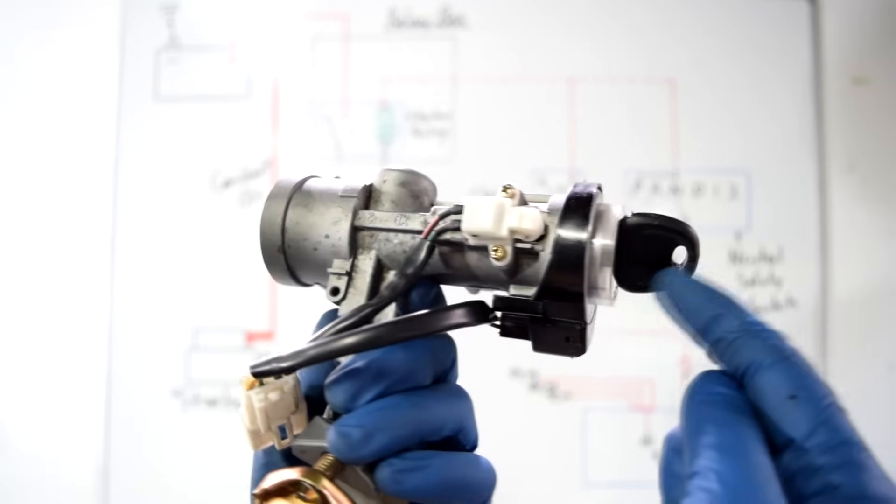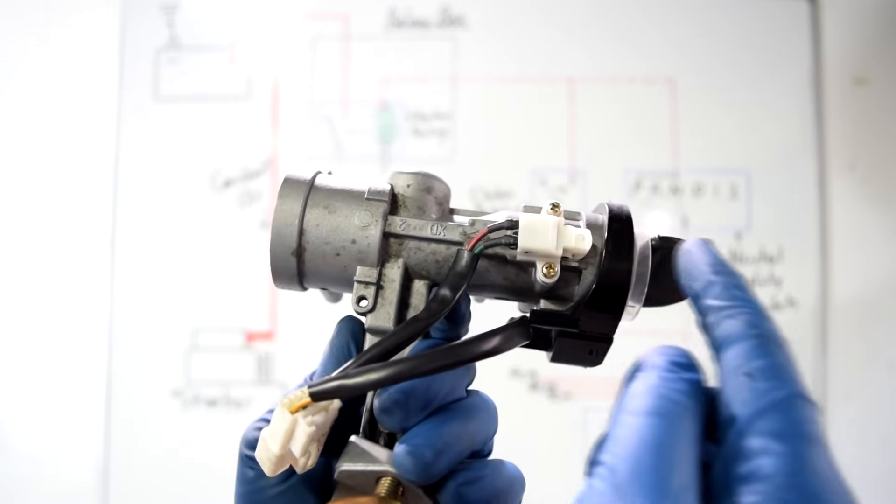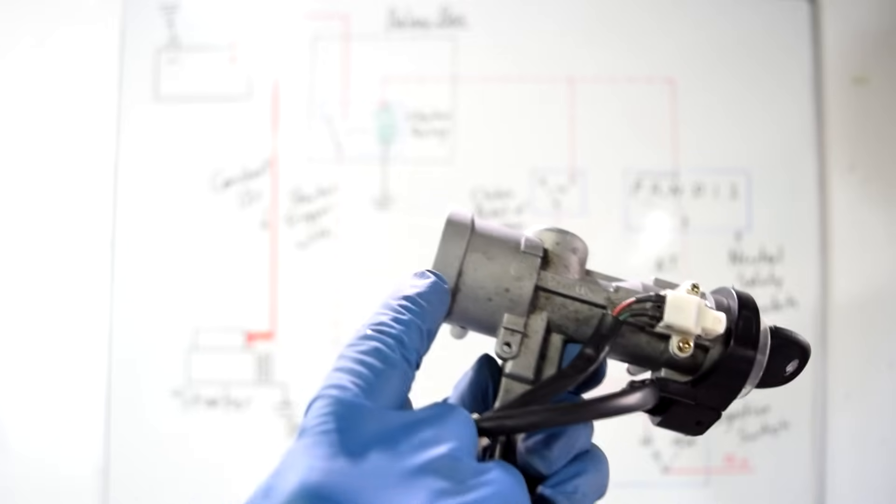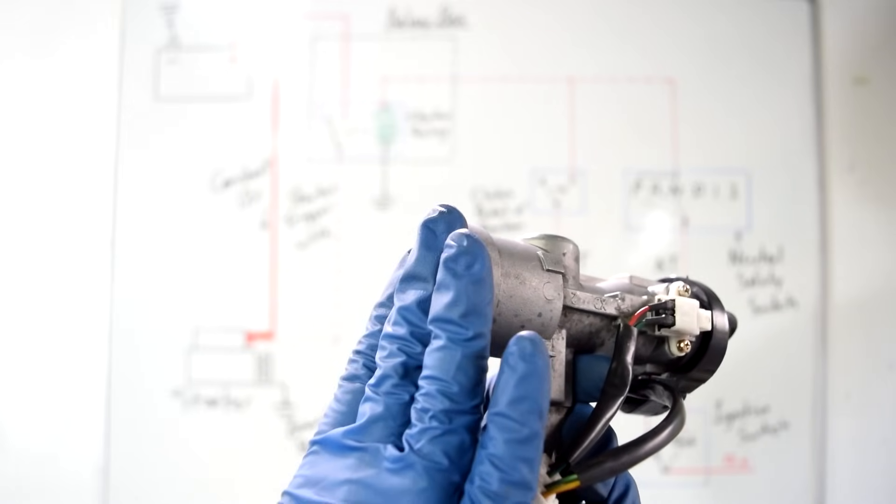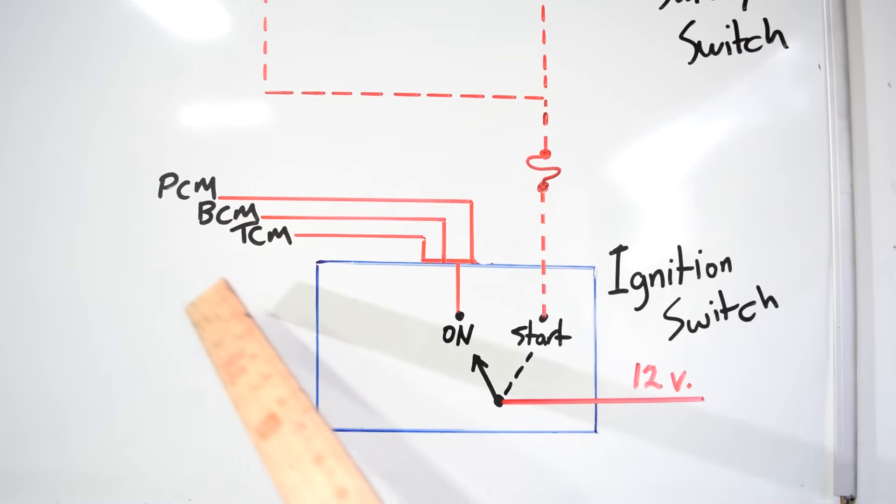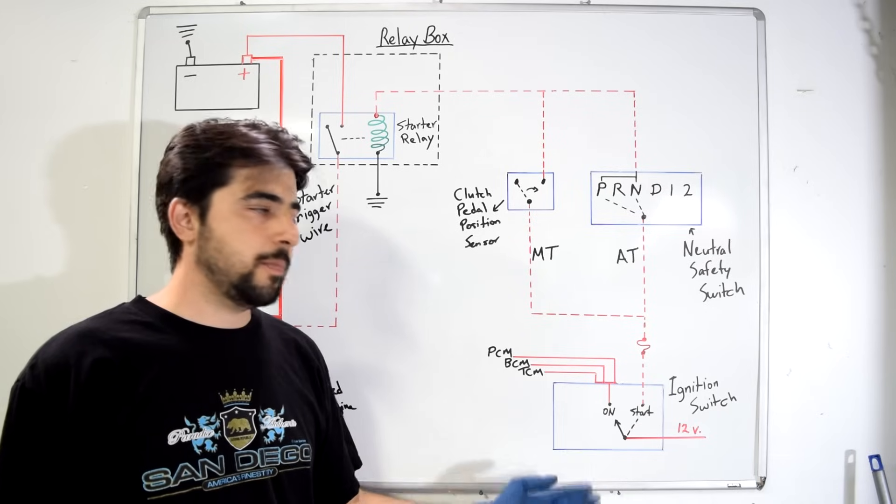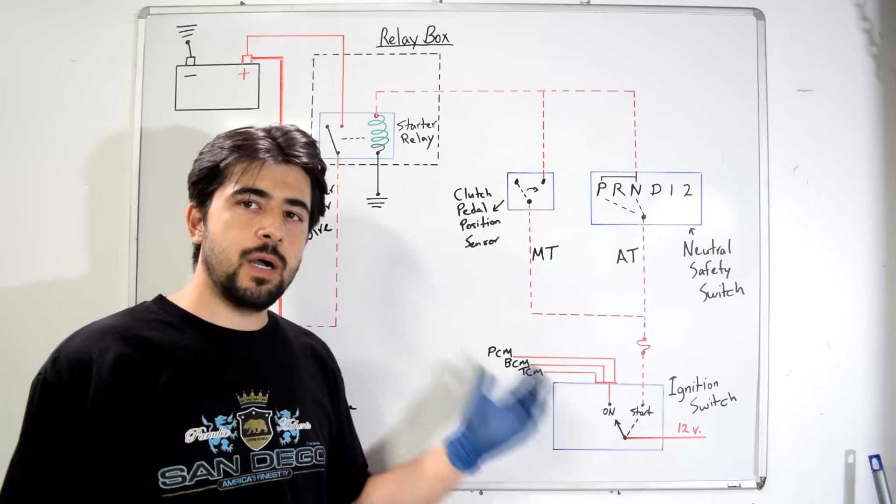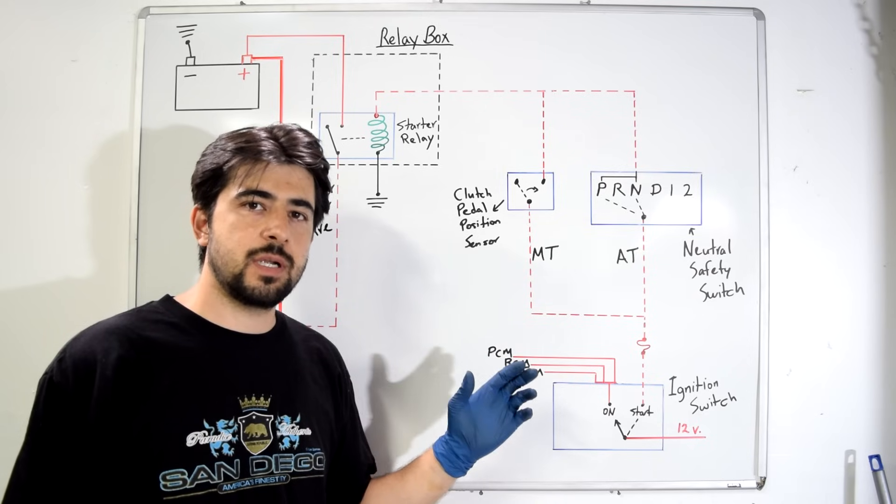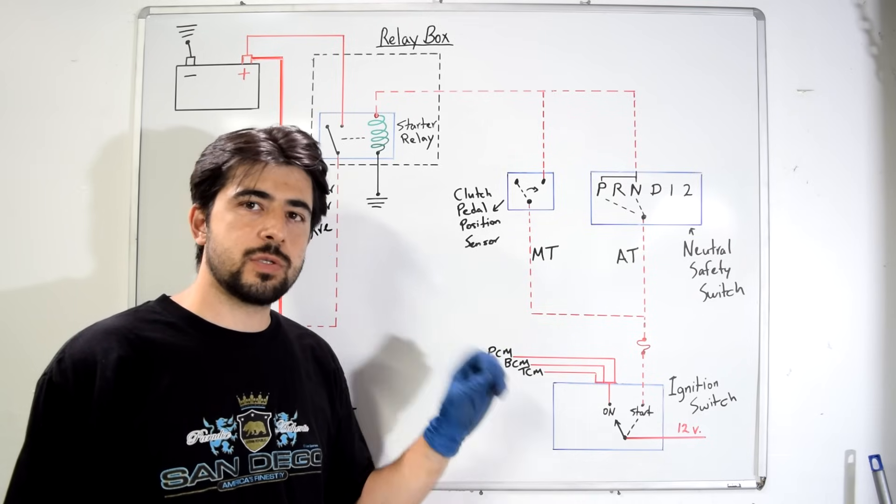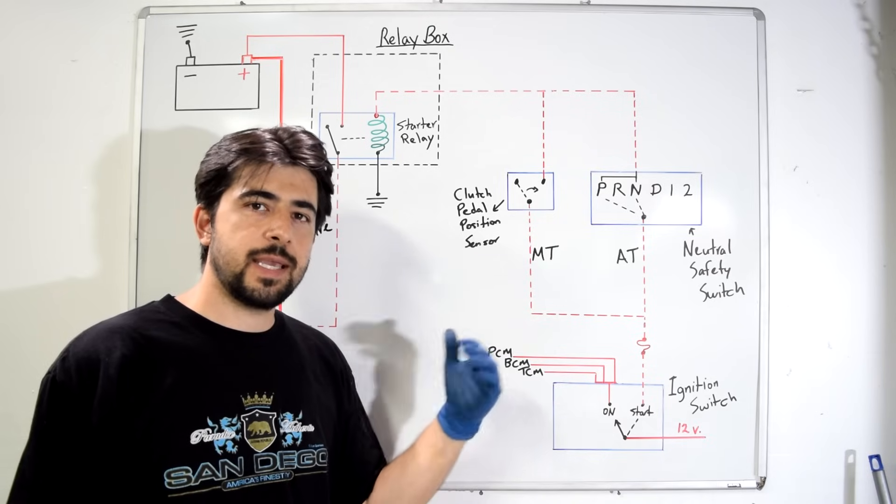Alright so when you get in your car and turn the key to the on position you're going to send voltage through your ignition switch, which is in the back of your ignition cylinder assembly like here, to all your different control modules that are necessary to be powered in order for your engine to run on your car to operate, like your PCM, BCM and TCM. Alright next, after you power up all your different modules, all that's left is a crank signal from your crankshaft position sensor in order for your power control module to start firing the fuel injectors and get your engine going.